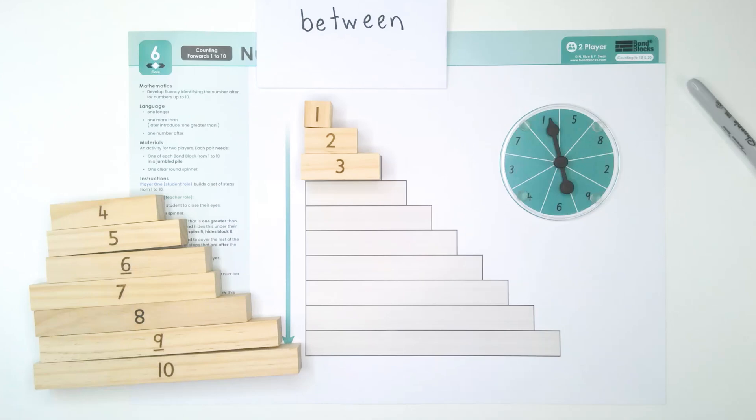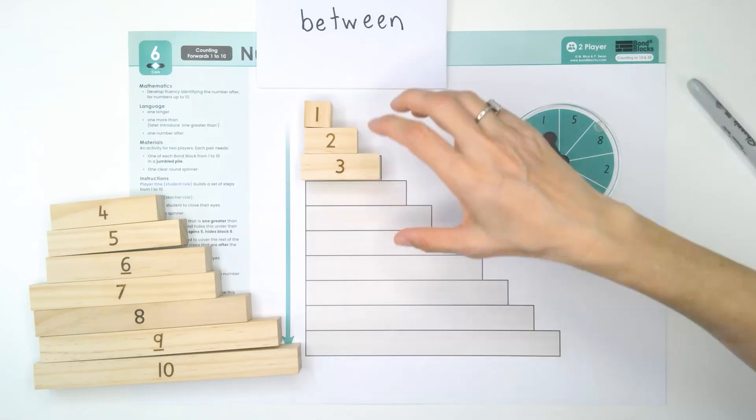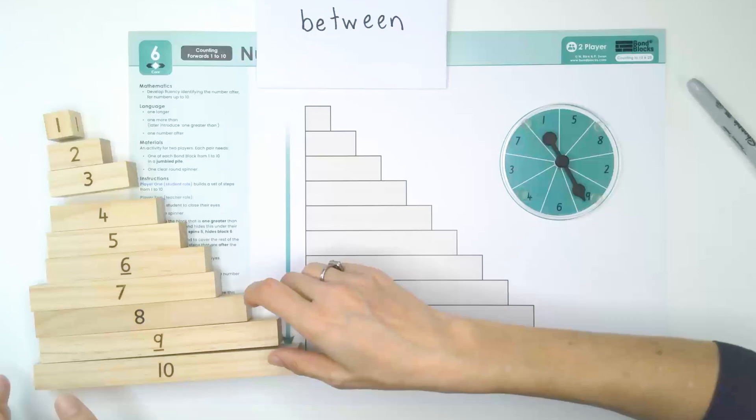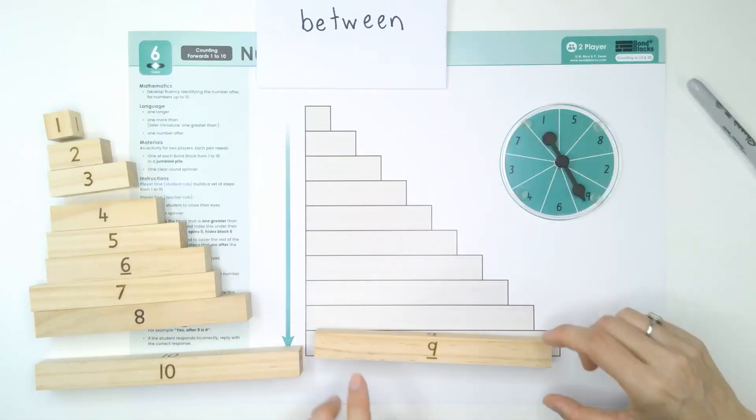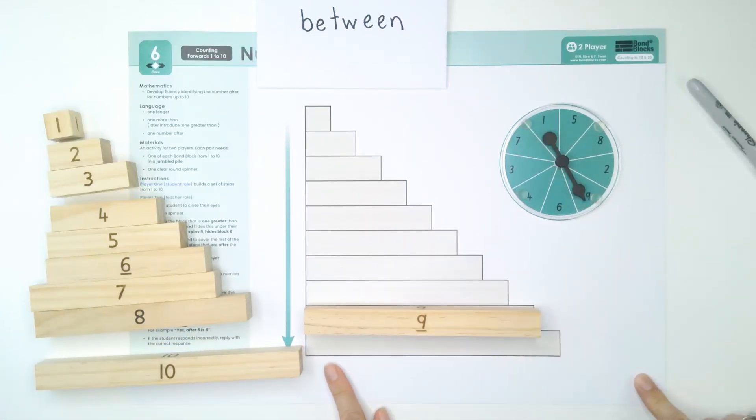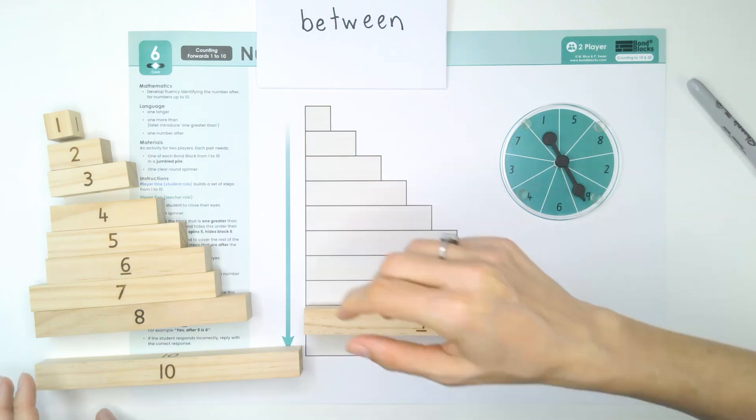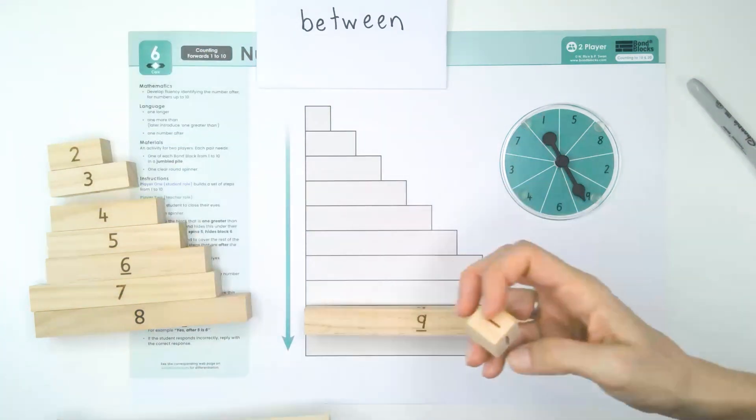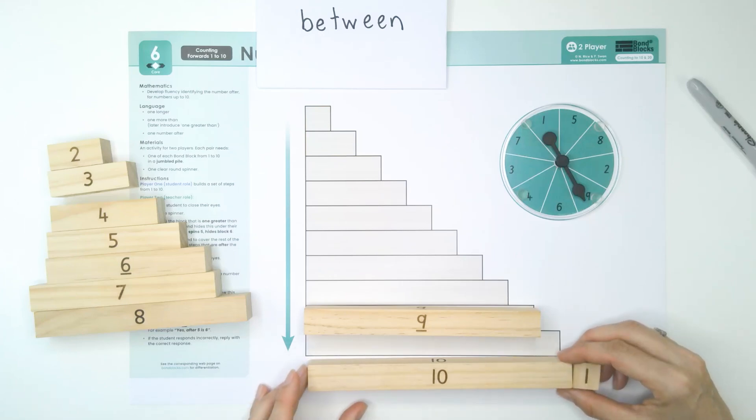Now, there's only one problem on this board. If you spin a nine, you can place the nine, but we don't have an eleven block. So, for that, you will need an extra ten and a one and that would make the eleven.